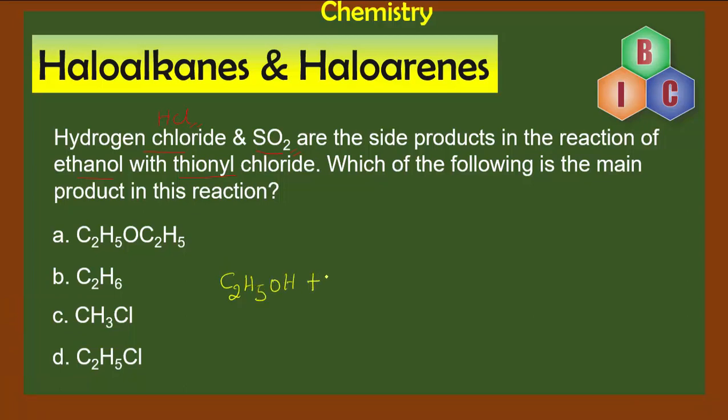First, let's write the equation between ethanol and thionyl chloride. Ethanol is C2H5OH and you are going to treat it with thionyl chloride, which is SOCl2. I want to draw your attention to one similar compound: SO2Cl2, which we call sulfuryl chloride, studied in p-block elements.